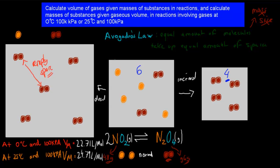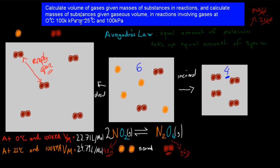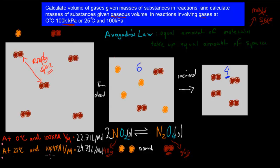Now we need to do some calculations. We have to calculate the volume of given substances in reactions, and calculate the mass of substances given gas volumes in reactions involving gases at 100 kPa and 25 degrees Celsius, or at 0 degrees Celsius and 100 kPa. So we have to either calculate at 0°C and 100 kPa, or at 25°C and 100 kPa. This determines how much volume one mole takes up — it's per mole.